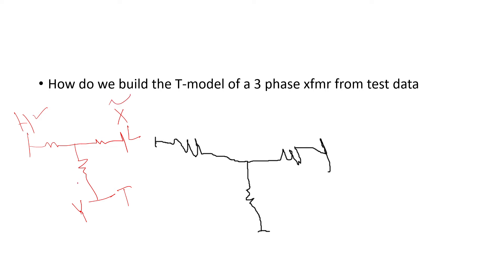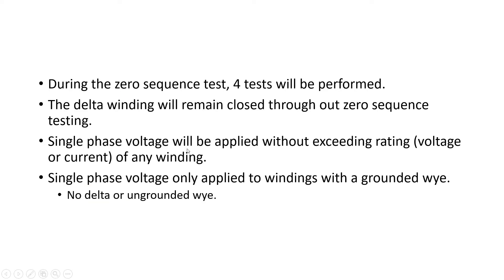During the zero sequence test, four tests will be performed. Again, these four tests are only if you have a grounded Y grounded Y. If let's assume for instance this neutral is not grounded, you cannot apply four tests, only one test. So you have to have access to the neutral. The other thing is if the neutral is grounded but it's internal, for small transformers, if you assume this is the tank and you have the coil assembly here, you have the core and you have the windings which are cylindrical for core form.